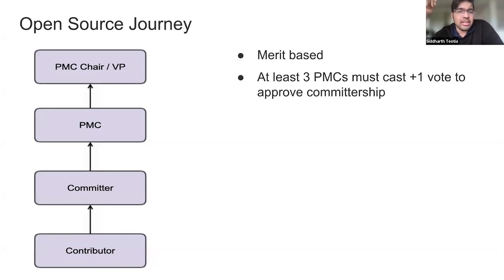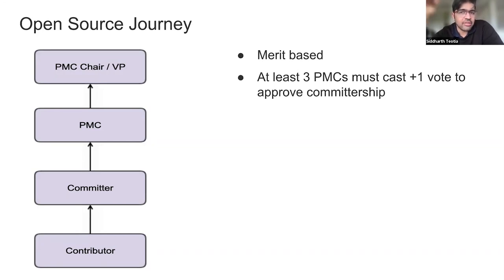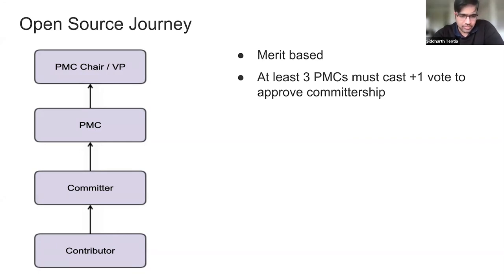Committer basically gives you write permissions. So essentially, if somebody has authored a PR, then your approval on that PR will count — it will allow you to merge that PR for that particular contributor or any other person's PR. It's basically a recognition of your contributions to that project.